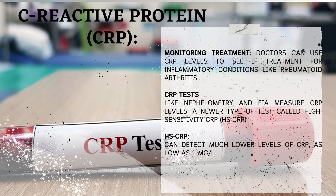Doctors can use CRP levels to monitor treatment for inflammatory conditions like rheumatoid arthritis. However, even with known inflammation, a low CRP doesn't always mean there's no problem. Tests like nephelometry and EIA measure CRP levels. A newer test called high-sensitivity CRP (hsCRP) is even more powerful — it can detect much lower levels of CRP, as low as 1 mg/L, helping uncover subtle chronic inflammation that older tests might miss.